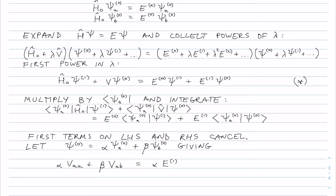This is equal to alpha times E1 from the right hand side, and psi a naught psi b naught is zero by construction because we assume that psi a naught and psi b naught are orthogonal to each other.